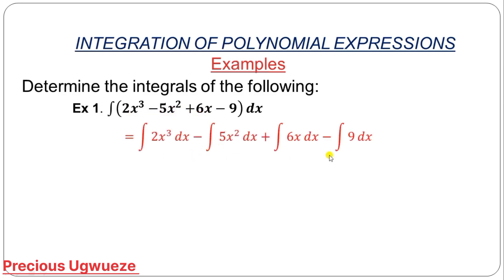So we're integrating 2x raised to the power 3 with respect to x, then minus the next term, and so on. We've already looked at how to integrate a given term: all you need to do is add 1 to the power and divide by the new power. That gives you your integration result.